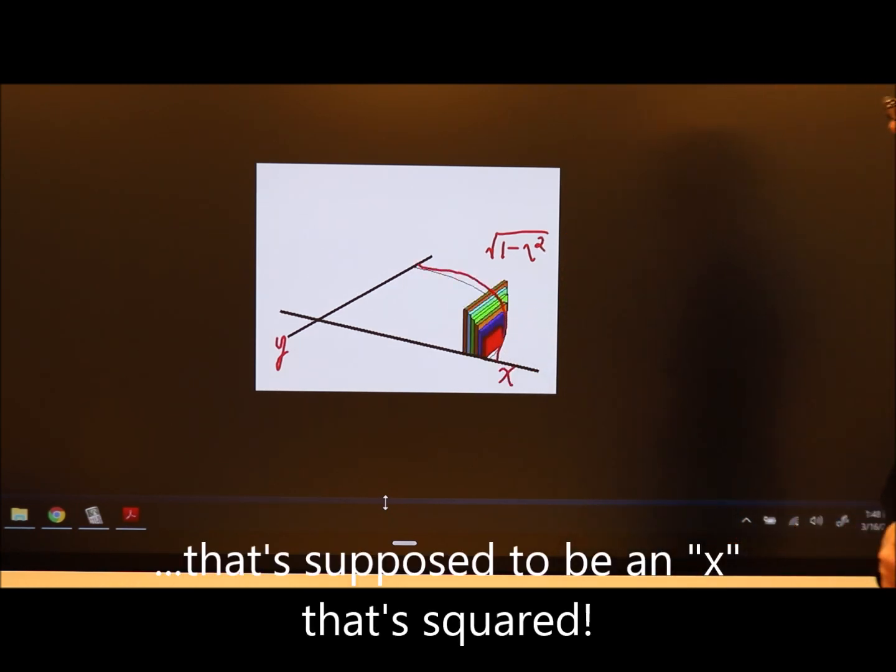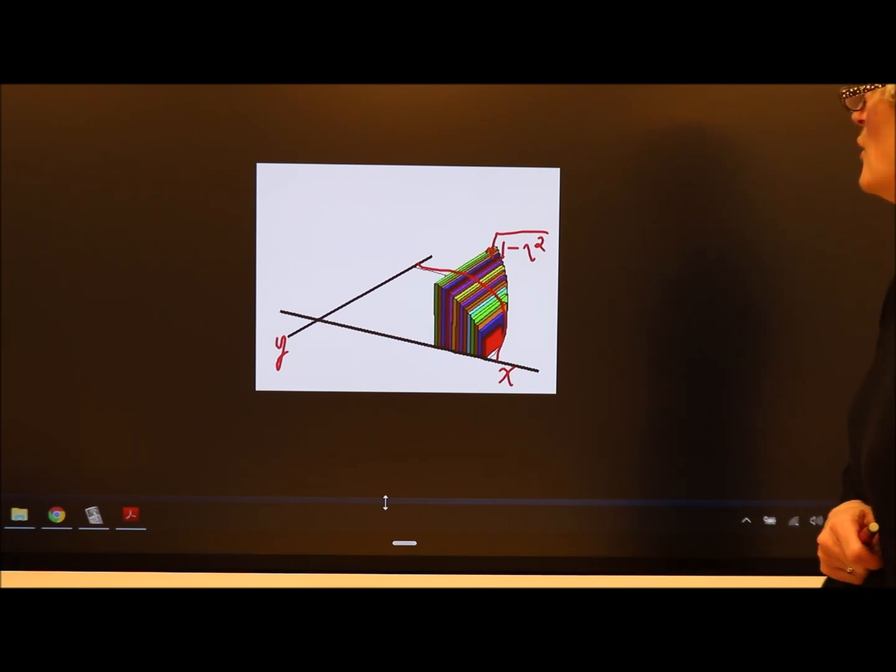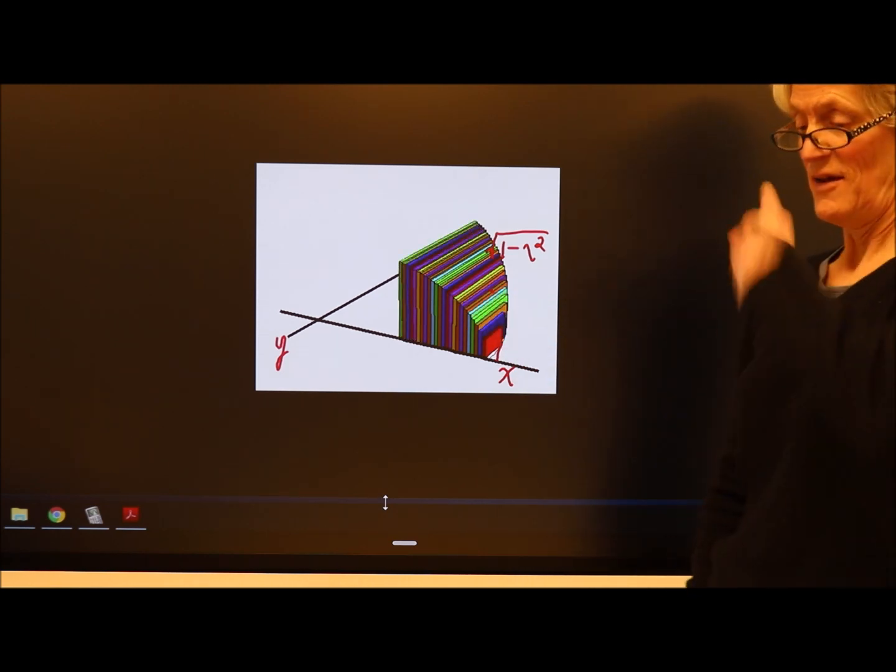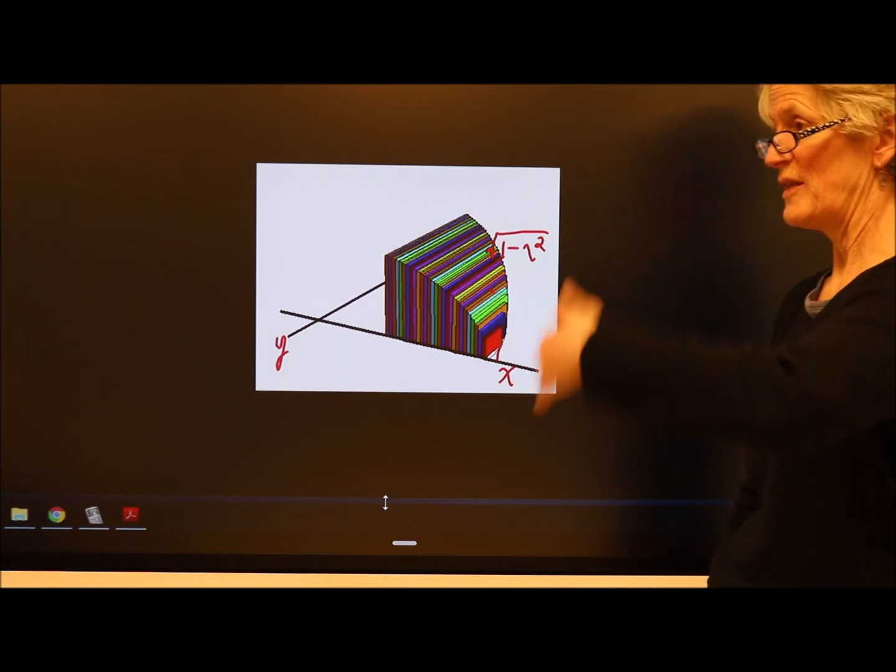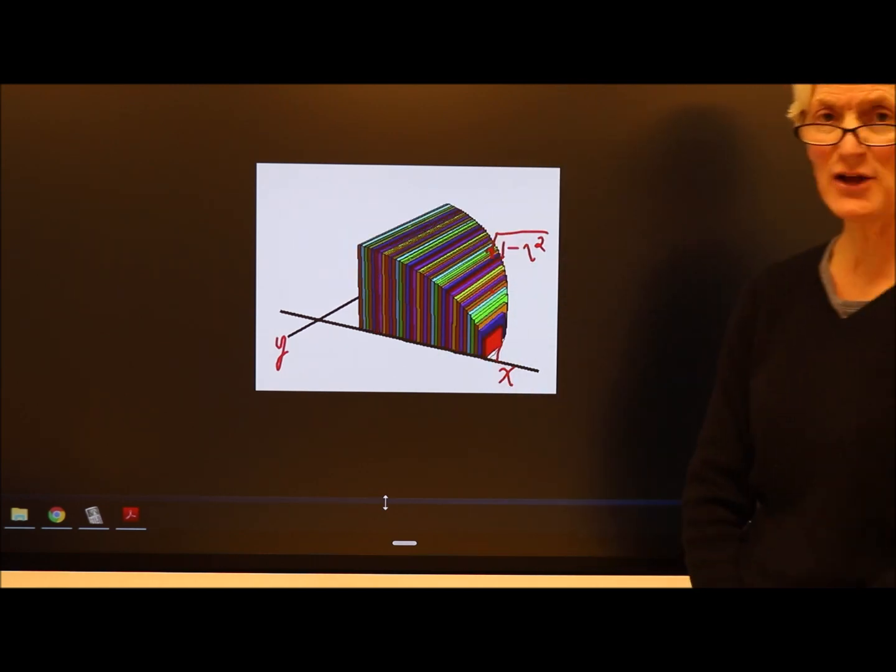And I'm stacking up square slices, if you will. Or the other way to think about it is, you have this solid and you can make slices so that there are squares. How can you find the volume of this?